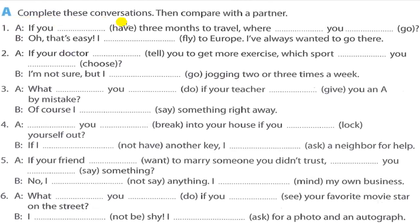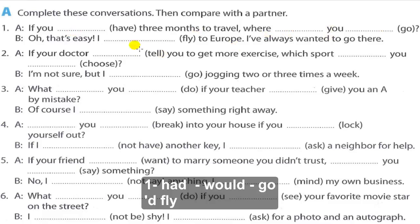Exercise A — Complete these conversations then compare with a partner. 1. 'If you had three months to travel, where would you go?' — 'Oh, that's easy. I'd fly to Europe. I've always wanted to go there.' Answer: 'had' (simple past), 'would go,' 'I'd fly' — I would fly. 'I'd' uses an apostrophe + d.